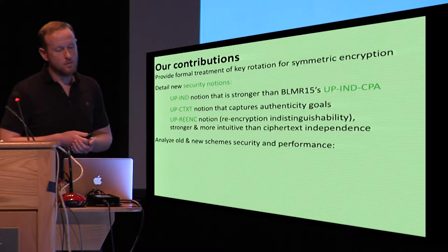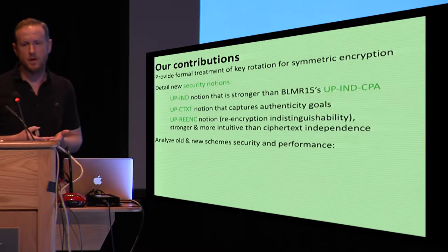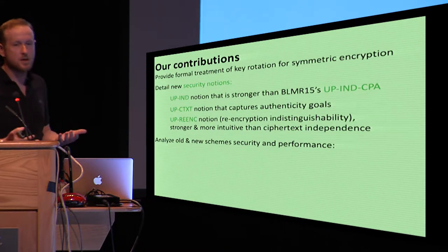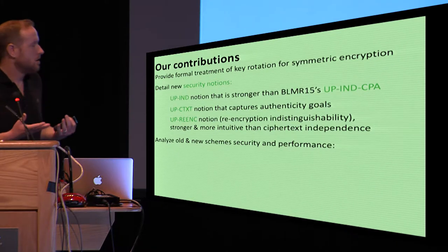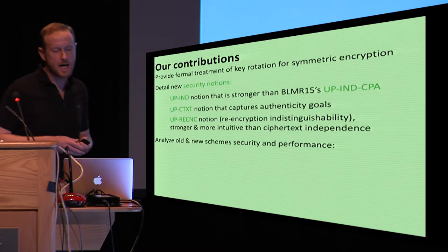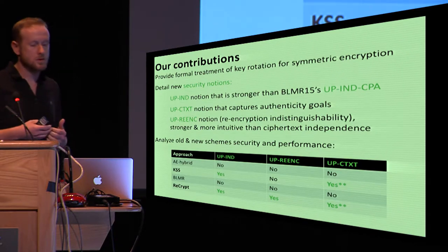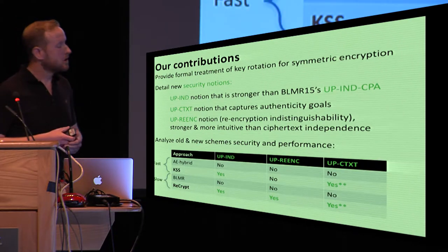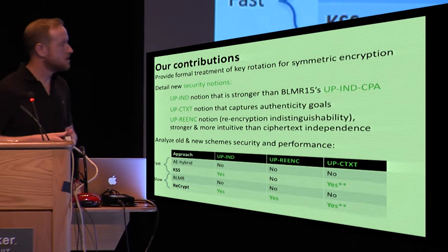So in our work, we give a treatment of key rotation for symmetric encryption, including authenticated encryption, and introduce three new security notions: an upIND notion that's stronger than BLMR15s, a ciphertext notion that captures authenticity goals in this setting, and then a so-called re-encryption indistinguishability notion that is, in our belief, a bit more intuitive than the ciphertext independence notion, and it also captures a much broader class of attacks. We use this to analyze both old and new schemes, and perhaps most noticeably introduce two new schemes, one called KSS that doesn't achieve up re-encrypt security but is very fast, and another re-encrypt, which is a variant of the BLMR scheme that repairs the issues from before but also extends it to meet our stronger security goals.